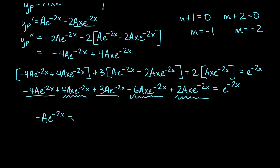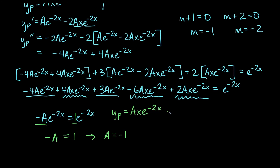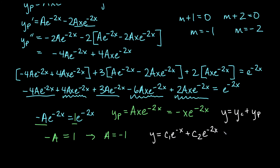Comparing coefficients, negative a equals 1, so a equals negative 1. Since y sub p was ax e to the negative 2x, our particular solution is y sub p equals negative x e to the negative 2x. The general solution is y equals c1 e to the negative x plus c2 e to the negative 2x minus x e to the negative 2x, and this last term is no longer a constant multiple of the c2 term.